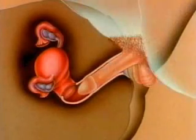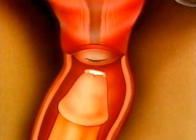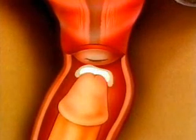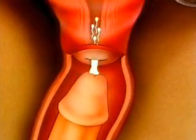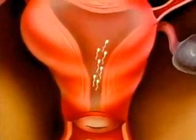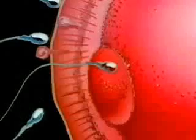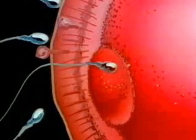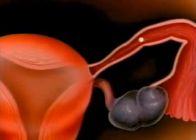Pregnancy occurs when the egg is fertilized. The sperm are ejaculated from the penis into the vagina. The sperm make their way up the cervix, into the uterus and into the tube towards the egg. When the sperm and egg unite, this is called fertilization. The fertilized egg then makes its way down the tube and attaches itself to the inner lining of the uterus.